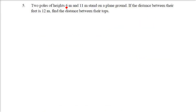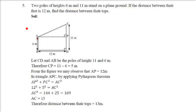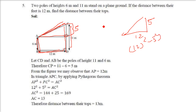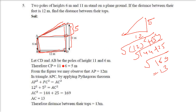Two poles of height 6 meters and 11 meters stand on plain ground. The distance between their feet is 12 meters. Find the distance between their tops. By construction, this horizontal distance is also 12 meters. The height difference between the tops is 11 minus 6, which is 5 meters. So we have a right triangle with legs 5 and 12. Applying Pythagoras: 5 square plus 12 square is 25 plus 144, which is 169. The square root of 169 is 13 meters. So the distance AC, the distance between their tops, is 13 meters.